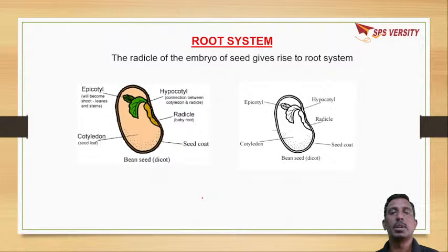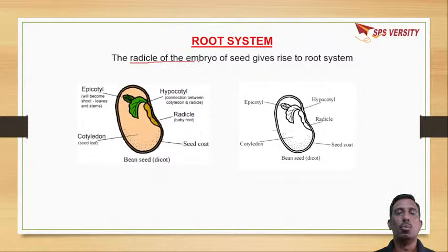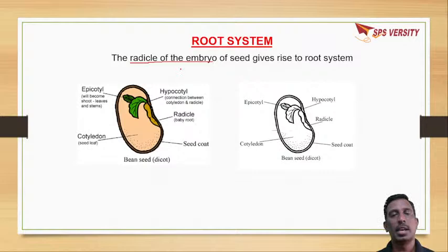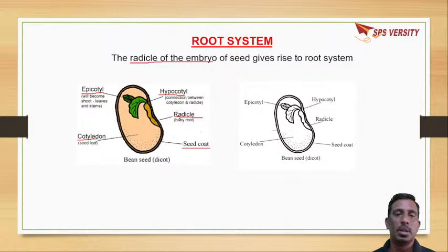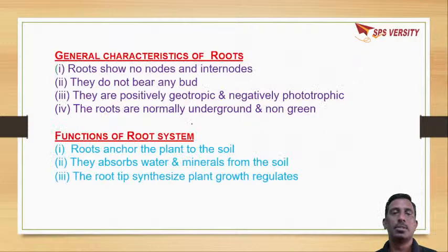First we discuss about the root system. A root system comes from the radicle of the embryo. The embryo is present inside the seed, and its parts are epicotyl, hypocotyl, cotyledon, seed coat, and radicle. From this radicle, the root system arises.